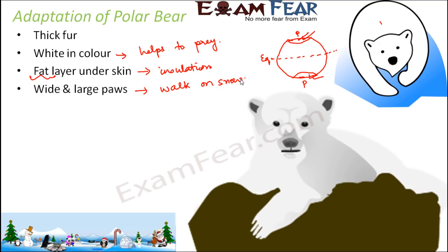These wide and large paws also help polar bears swim during summer. Even in summer the polar regions are quite cold, but due to their fur and fat layer their bodies can overheat, so they go swimming to cool down. Their paws help them swim effectively. They also have a very strong sense of smell, which helps them locate and catch their prey.